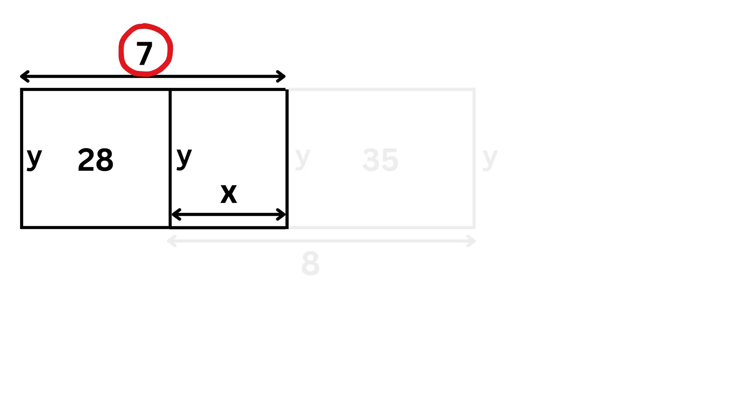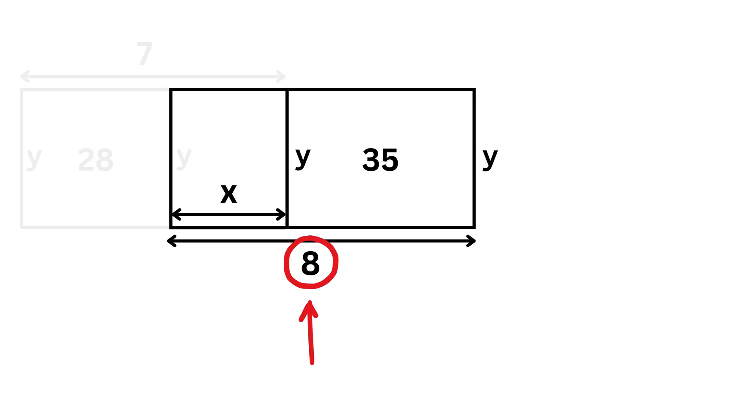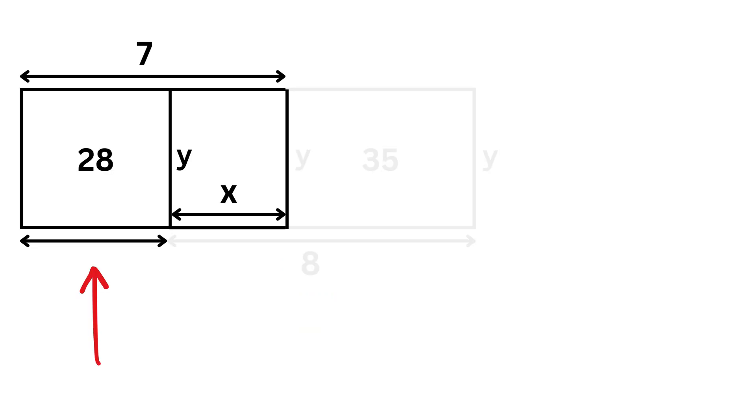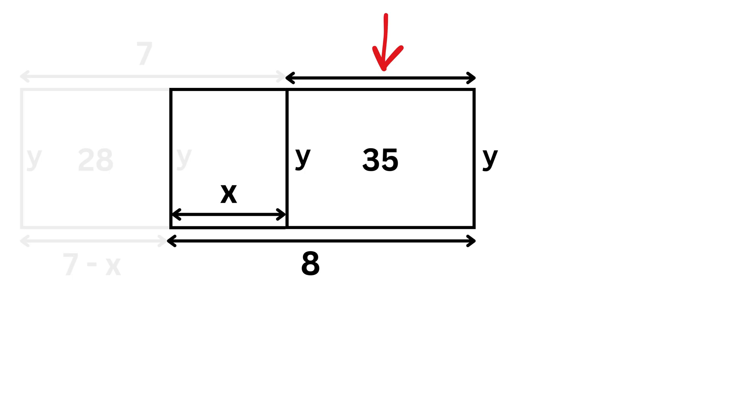Now the total length of the left part together with the middle part is seven units, and the total length of the middle part together with the right part is eight units. That means the left rectangle has a length of seven minus x, while the right rectangle has a length of eight minus x.